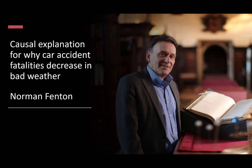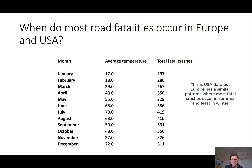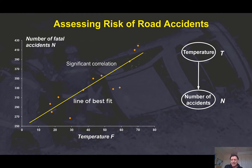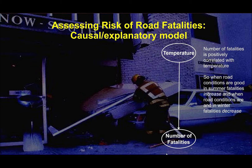This short video provides a causal explanation for an apparently counterintuitive correlation. If you look at recent road fatalities data in Europe and the USA — the total fatal crashes per month and also the average temperature in that month — if we plot that on a graph, we actually find a very close correlation. That seems to suggest a relationship between temperature and number of accidents. That line of best fit is called the regression equation, so it seems that temperature influences the number of fatalities, and fatalities are positively correlated with temperature.